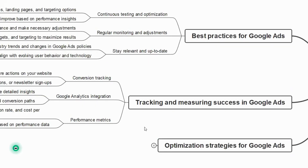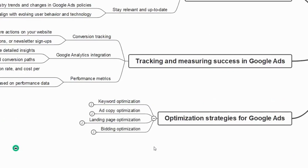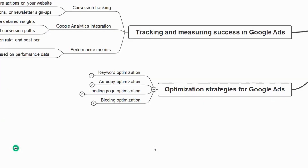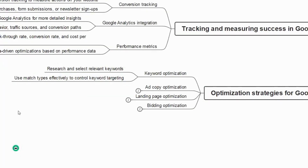Now we have optimization strategies for Google Ads: keyword optimization, ad copy optimization, landing page optimization, and bidding optimization. For keyword optimization, research and select relevant keywords using Google Keyword Planner, and use match types — exact match, phrase match, and broad match — effectively to control keyword targeting.